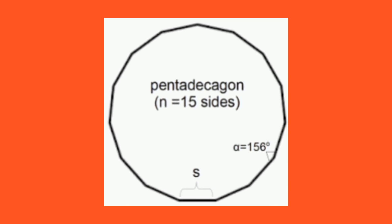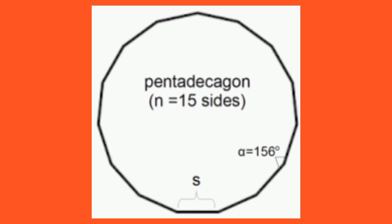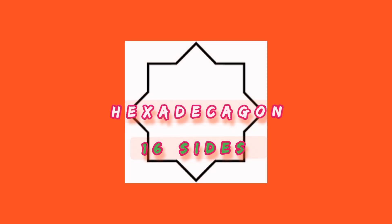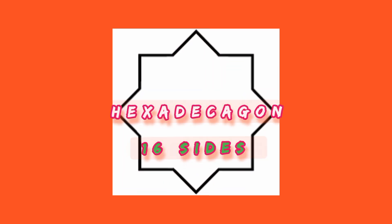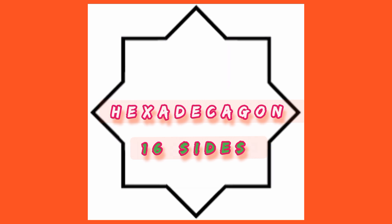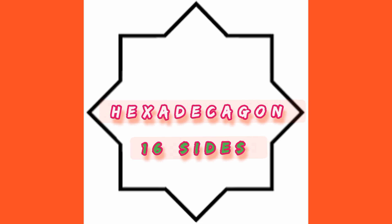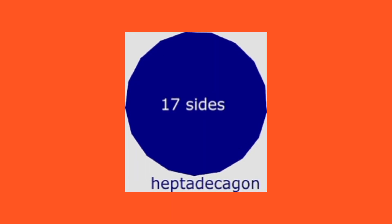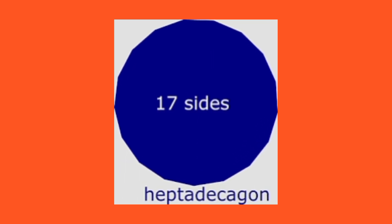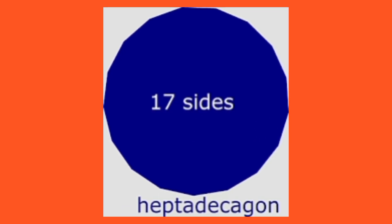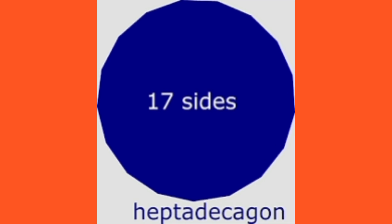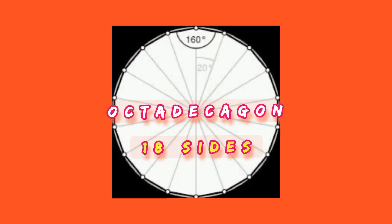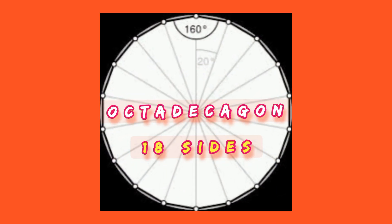Pentadecagon — these are shapes with 15 sides. Hexadecagon — these are shapes with 16 sides. Heptadecagon — these are shapes with 17 sides. Octadecagon — these are shapes with 18 sides.